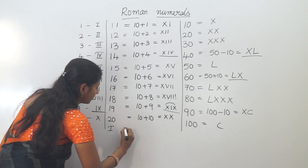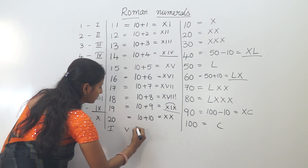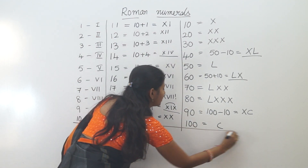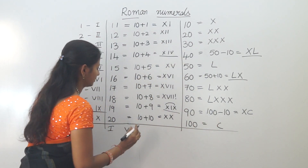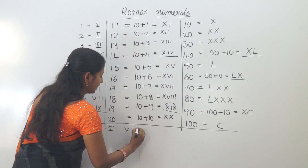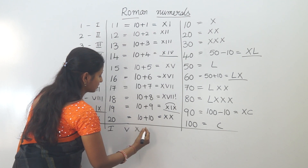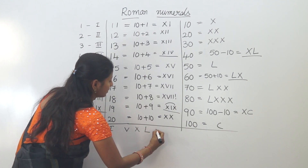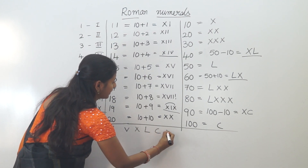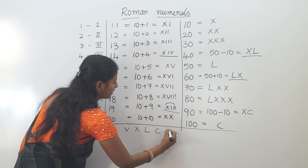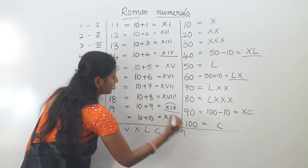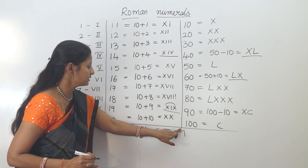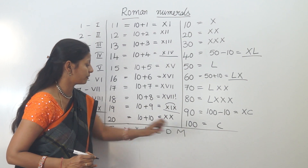The main Roman numeral symbols are: I (1), V (5), X (10), L (50), C (100), D (500), and M (1000). These are the 7 main symbols we use in Roman numbers.